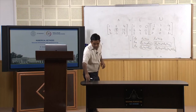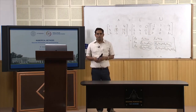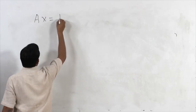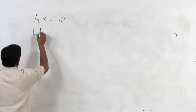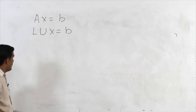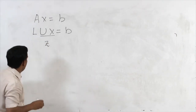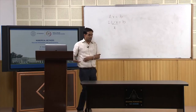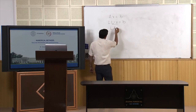Now the question is how to solve a linear system using the concept of factorization. We have Ax = B, and A has been decomposed as L·U, so L·U·x = B. Let us assume U·x = Z, where Z is a column vector [Z1, Z2, ..., Zn]. Substituting Ux = Z, the original system becomes L·z = B. Note that L is a lower triangular matrix.